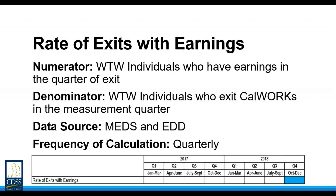Now we'll move on to three measures that look at some aspect of CalWORKs exits and re-entries, starting with the rate of exits with earnings. In this measure we're trying to assess what portion of CalWORKs exiters have earnings at their time of exit. We'll use EDD and MEDS data to calculate this on a quarterly basis. We start by looking at all welfare-to-work individuals that exit CalWORKs in a given quarter using MEDS data, then we look at which of those individuals had EDD-reported earnings during that same time period. For the first calculation, data from October through December 2018 was utilized, indicated by the blue shading.